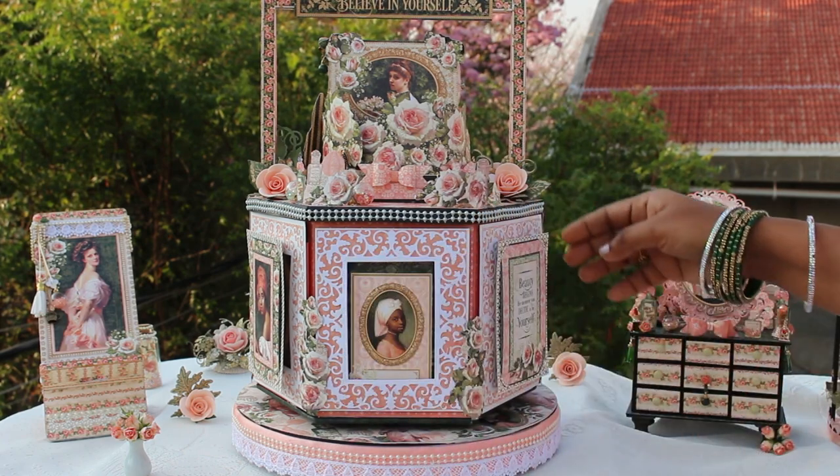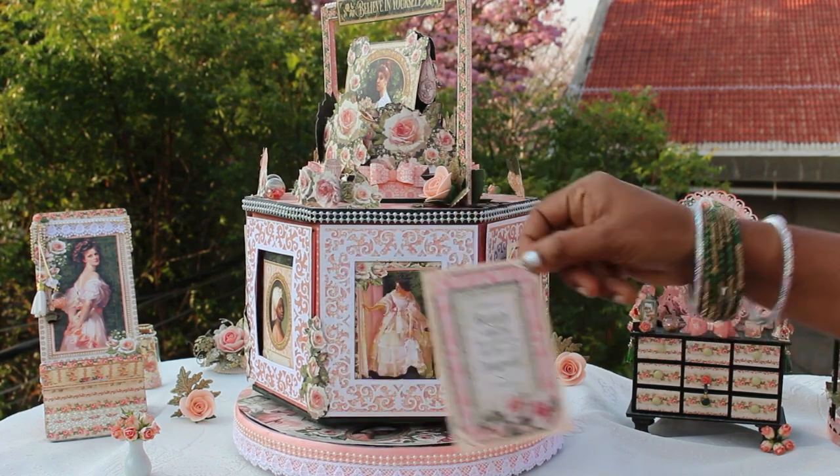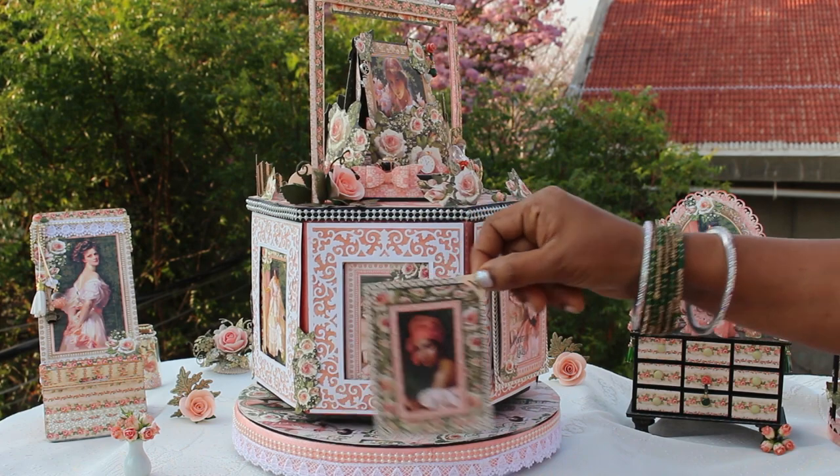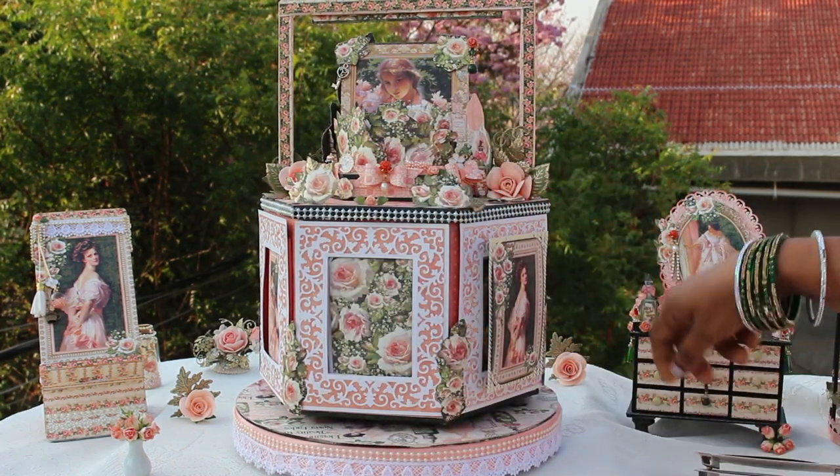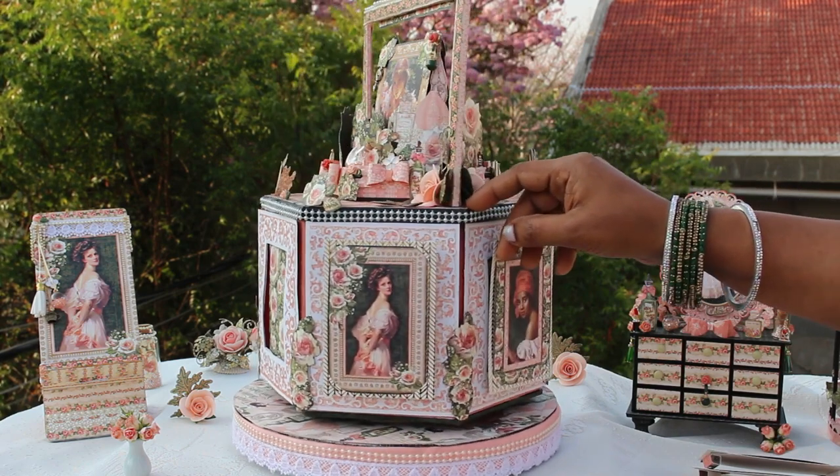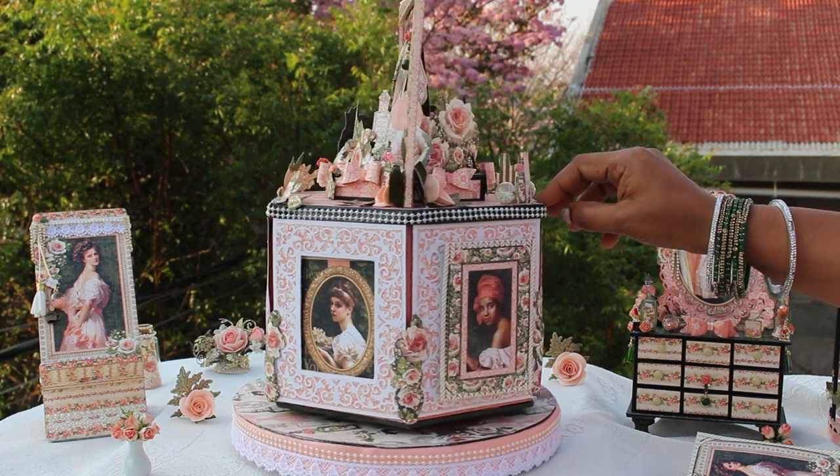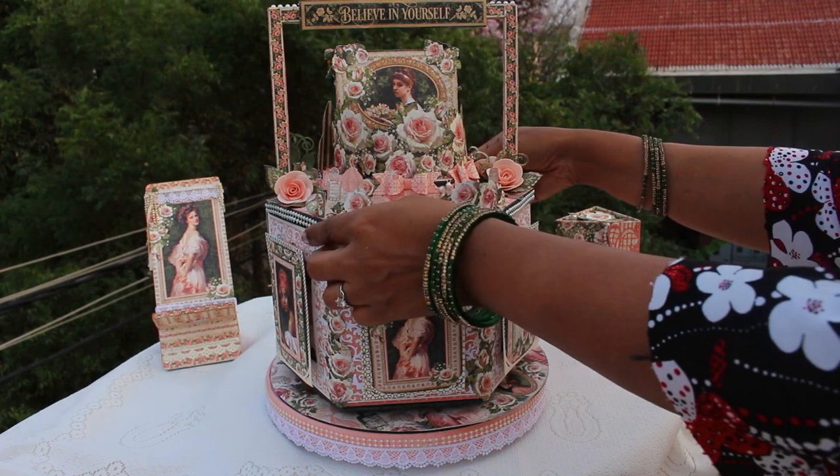Here is how the photo frames can be removed to reveal hidden photo frames inside. The photo frames on the outside of the box have magnets and hence are easy to remove and place back. The photos inside, that is the photos underneath, can be removed by a sliding mechanism once you remove the lid.